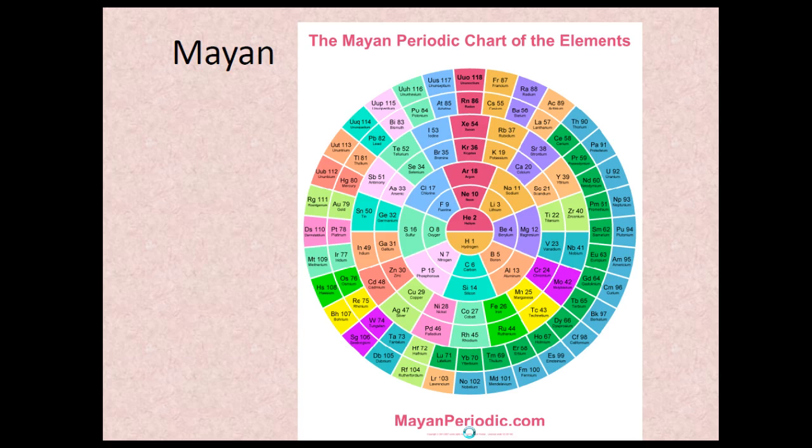Here is one that is in a circle. Notice hydrogen and helium start in the middle, and each period radiates out from that.